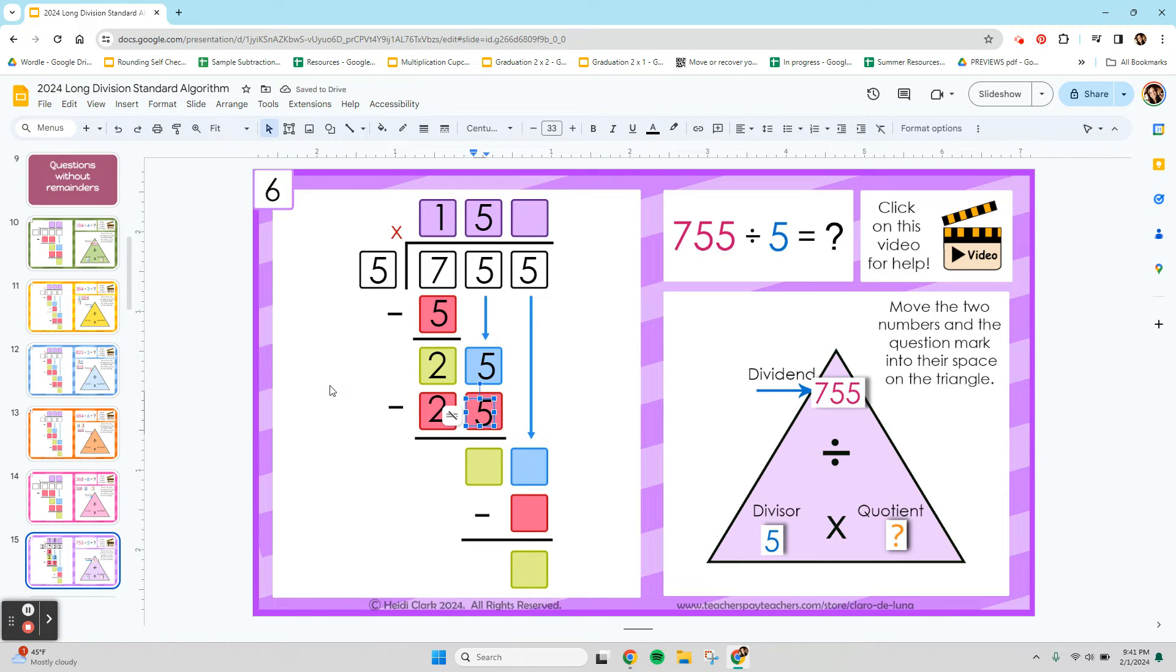All right. What we've learned so far is that 5 fits into 750 150 times. It fits into the 700 one time, plus some left over. And then it fits into the 50 five times.